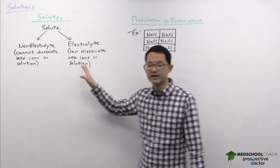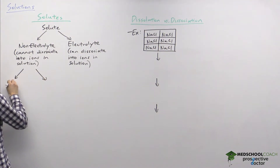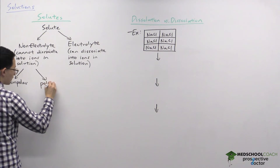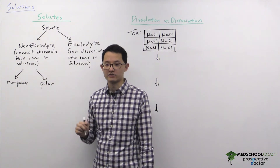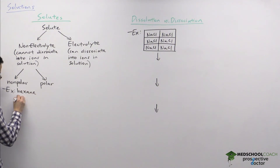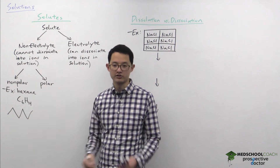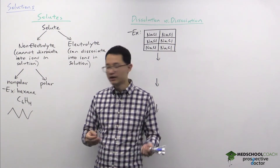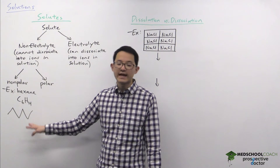Both of these can actually be further classified. Non-electrolytes can either be non-polar non-electrolytes or polar non-electrolytes — both cannot dissociate into ions in solution. A good example of a non-polar non-electrolyte is hexane, with molecular formula C6H14. Hexane is a hydrocarbon, a non-polar compound, and since water is polar, hexane cannot dissolve in water.